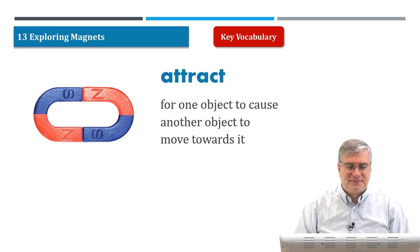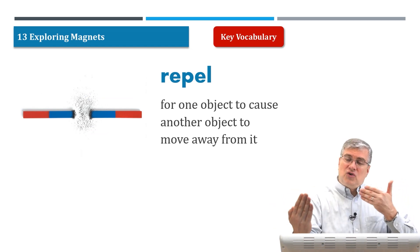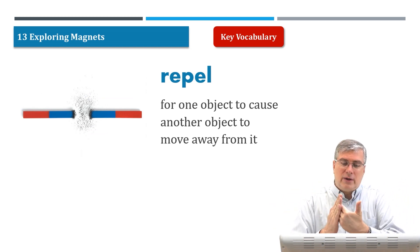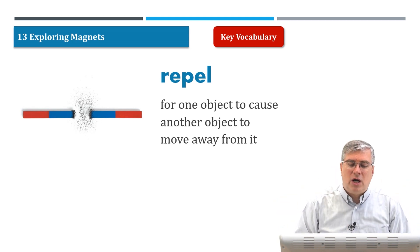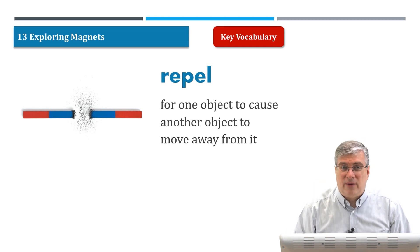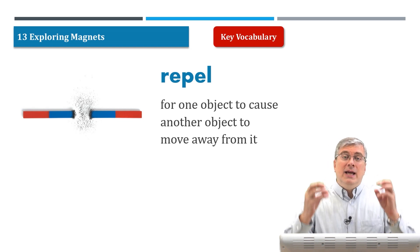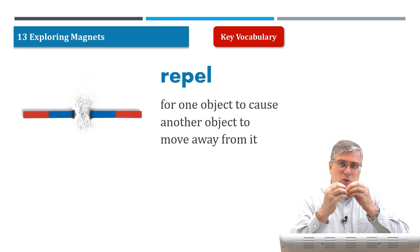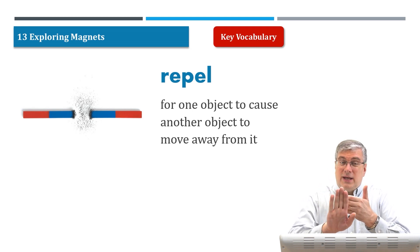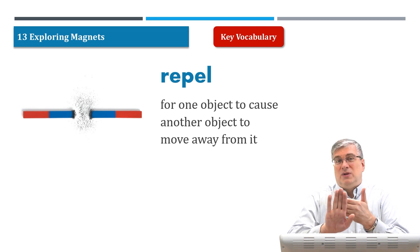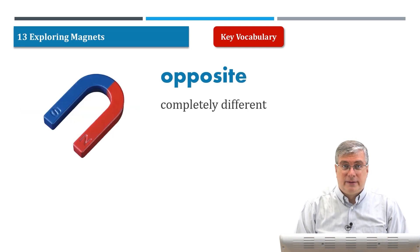Next we have repel. Repel is the opposite of attract. If attract means two objects are moving closer to each other, repel means that they move away from each other. Repel is for one object to cause another object to move away from it. Attraction and repel are both types of forces — attraction pulls another thing towards it with a certain force, and repel exerts a force on the two objects to separate them and make them move away from each other.